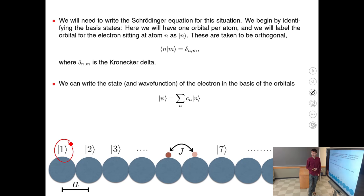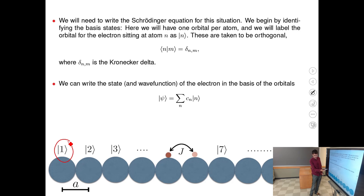Each atom has a single orbital, and we make further approximations to deal with these orbitals in a simple way. First, we say all these orbitals are orthogonal — quantum mechanically orthogonal.